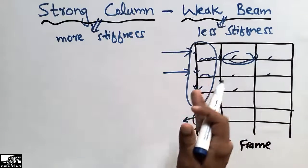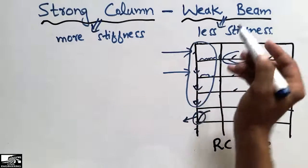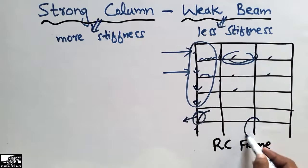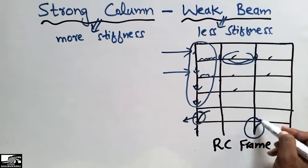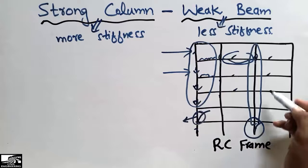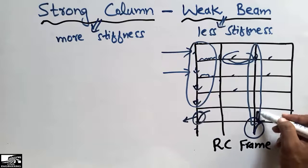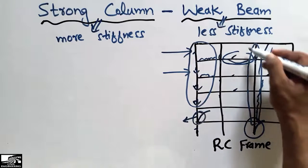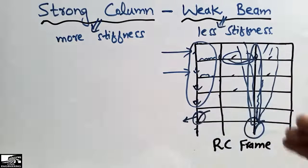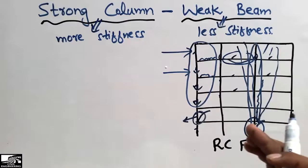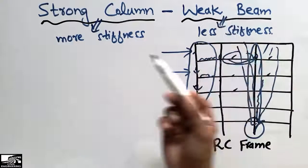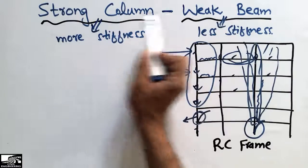That's the reason we should provide the strong column with more stiffness than the beam. When the beam fails, there is partial collapse. But when the column fails, your whole building — which is structured on this column — will collapse, causing these beams to collapse as well, which causes sudden failure of the structure. We must avoid a weak column and strong beam scenario.